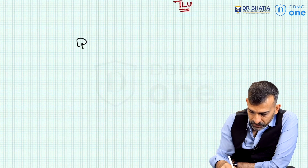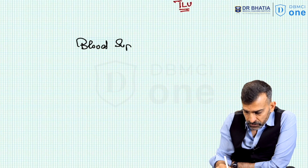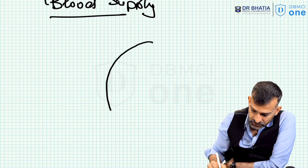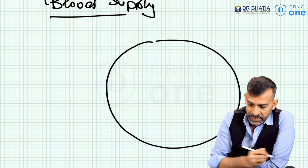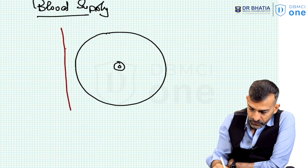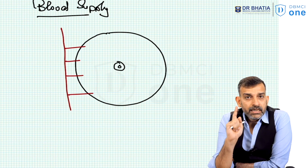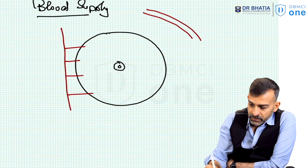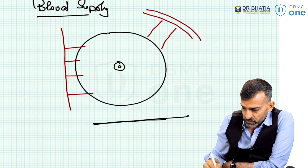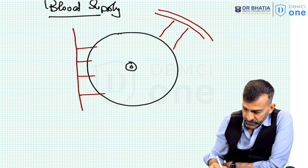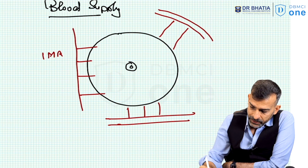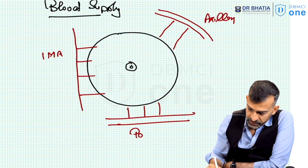Now let's discuss the blood supply of the breast and its clinical relevance. The breast is supplied by branches of the internal mammary artery, branches of the axillary artery, and branches of the posterior intercostal arteries. So the three main arterial sources are the internal mammary artery, axillary artery, and posterior intercostal artery with their respective branches.